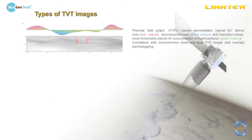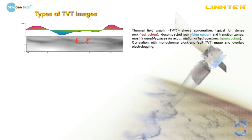On this picture we see a thermal field graph. It shows abnormalities typical for dense rock in red color, decompaction zones in blue color, and transitional zones in green color — the most favorable places for hydrocarbon accumulation. Below this picture we see a monochrome block-and-fold TVT image with overlaying of electrologging. There is a strong correlation between green transitional zones of the thermal field graph and electrologging data.